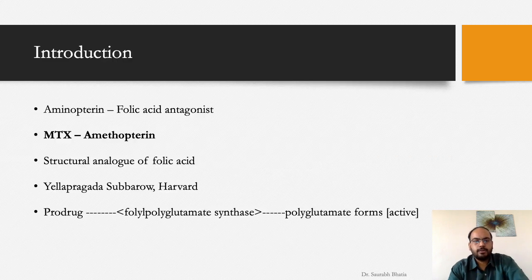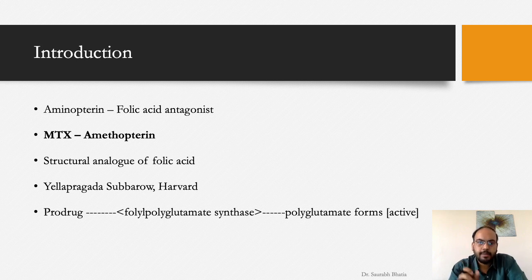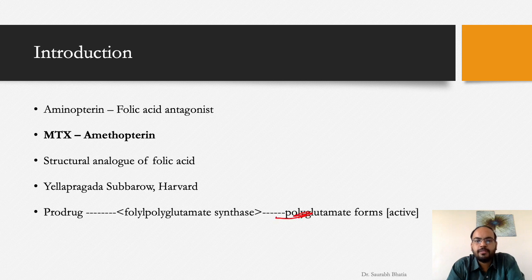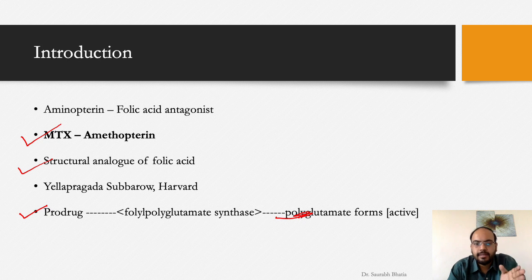Methotrexate starts with aminopterin, which is a folic acid antagonist. Methotrexate is a congener of aminopterin, and its chemical name is aminopterin. It's a structural analog of folic acid, discovered by Yellapragada Subbarao at Harvard University. It is essentially a prodrug; the enzyme folyl polyglutamate synthase converts it into polyglutamate forms, which are the active forms responsible for all immunomodulatory activity.